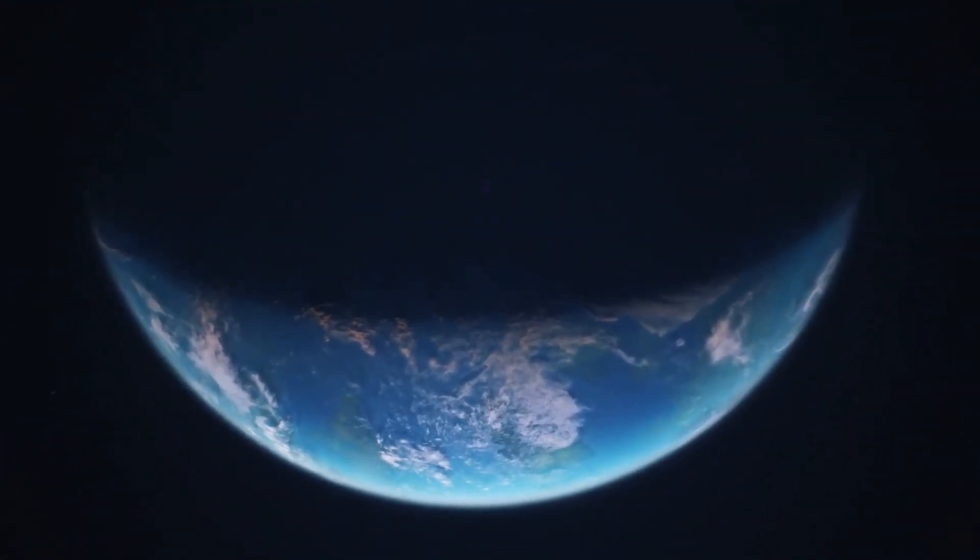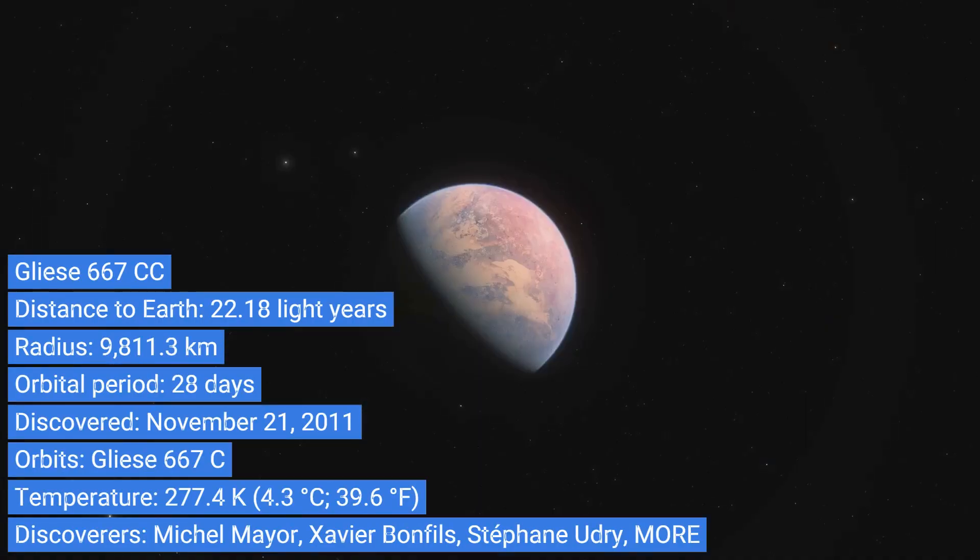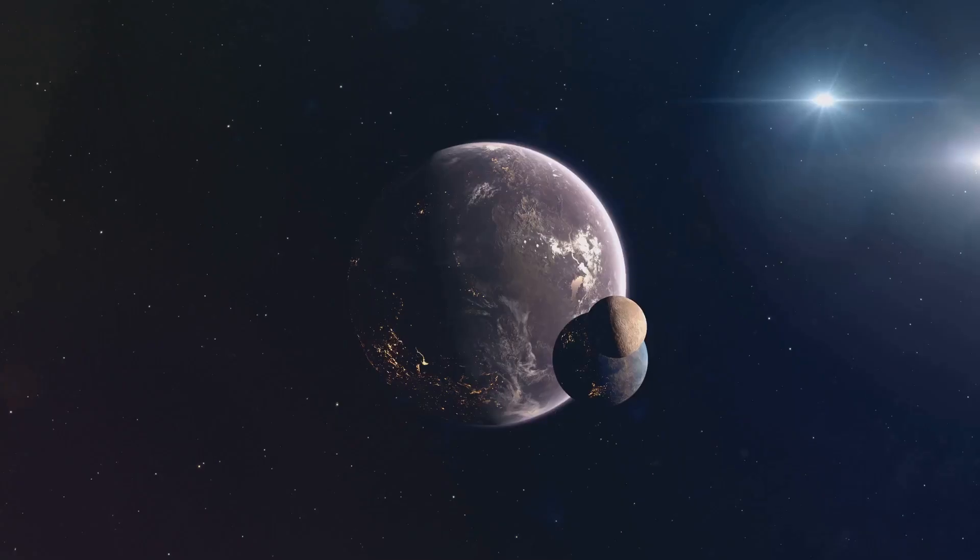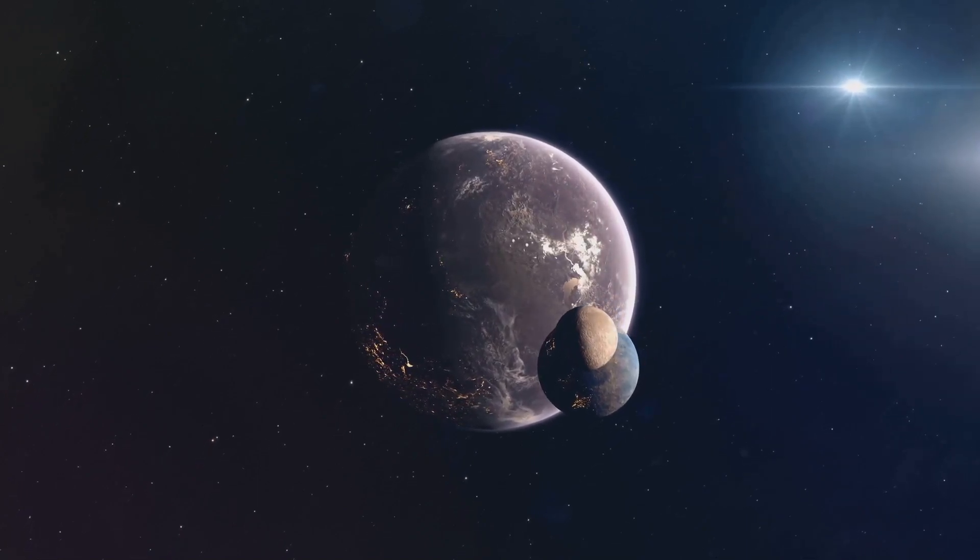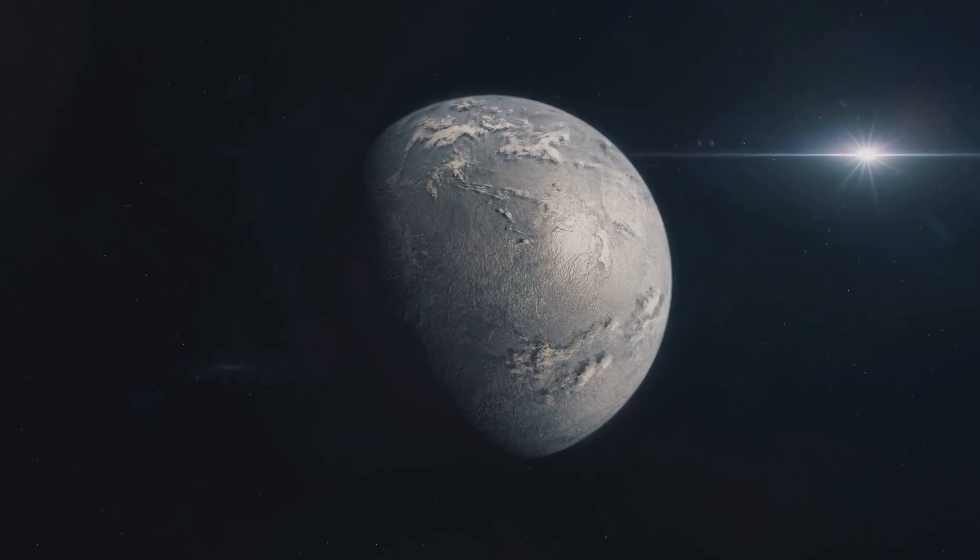Let's journey to Gliese 667 cc, a planet that holds much promise. Nestled in the habitable zone of its star and similar in size to Earth, it could potentially host life. Gliese 667 cc, with its striking resemblances to Earth, is a promising prospect in our search for life beyond our planet.